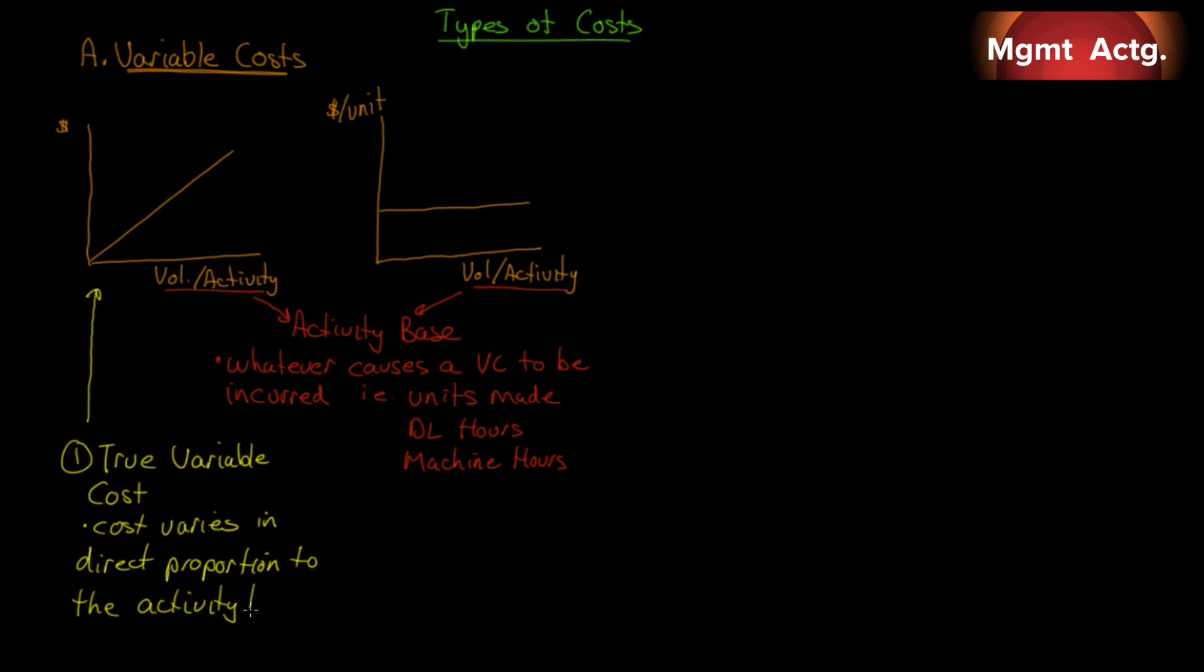But it doesn't have to be that way. I want you to think of a software license. A software license may be good for the first 10 users, and there's one fee. Then you'd have to pay another fee for the next 10 users. So from user 1 to user 10, the cost looks fixed. But from user 1 to user 1,000, the cost looks variable. But it's variable in steps. So it's called a step variable cost. It varies only with certain increases to the activity base, but it still varies with the activity base.